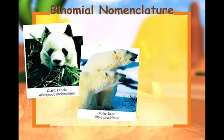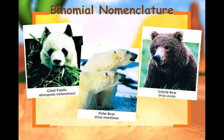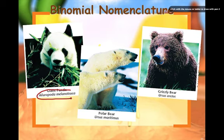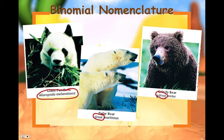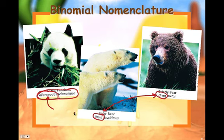Looking at three pictures that all appear to be bears, we can see they are not the same when we examine their genus and species. The polar bear and the grizzly bear both share the genus Ursus, meaning they are more closely related to each other than to the panda, which belongs to a totally different genus.